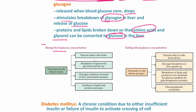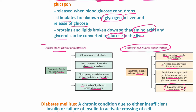When blood glucose rises, insulin released from the pancreas causes glucose to enter cells faster, speeds up glycolysis, increases glycogen synthesis in liver and skeletal muscle, and increases synthesis of lipids and proteins. When blood glucose falls, glucagon released from the pancreas slows glucose entry into cells, speeds up glycogen breakdown in the liver, and stimulates breakdown of lipids and proteins to provide raw materials for glucose synthesis.